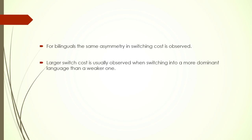Returning to bilingualism — the same asymmetry in switching cost is observed. This is because very few bilinguals are truly balanced; most have one language that is stronger and more dominant, usually the earlier acquired language. This is why bilingual production studies also show an asymmetric switch cost. Larger switch cost is usually observed when switching into the more dominant language — more often than not, this will be L1. Switching from L2 to L1 takes longer compared to L1 to L2.